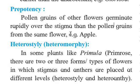The next device is called prepotency, in which pollen grains of other flowers germinate rapidly over the stigma compared to the pollen grains from the same flower. In this case also, the flower is bisexual, but there is a kind of genetic mechanism.